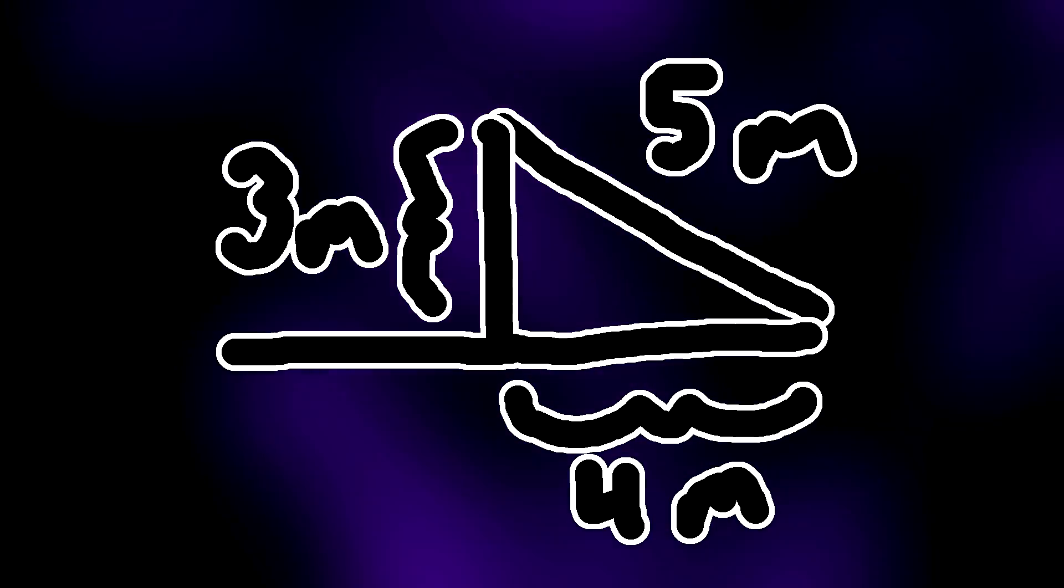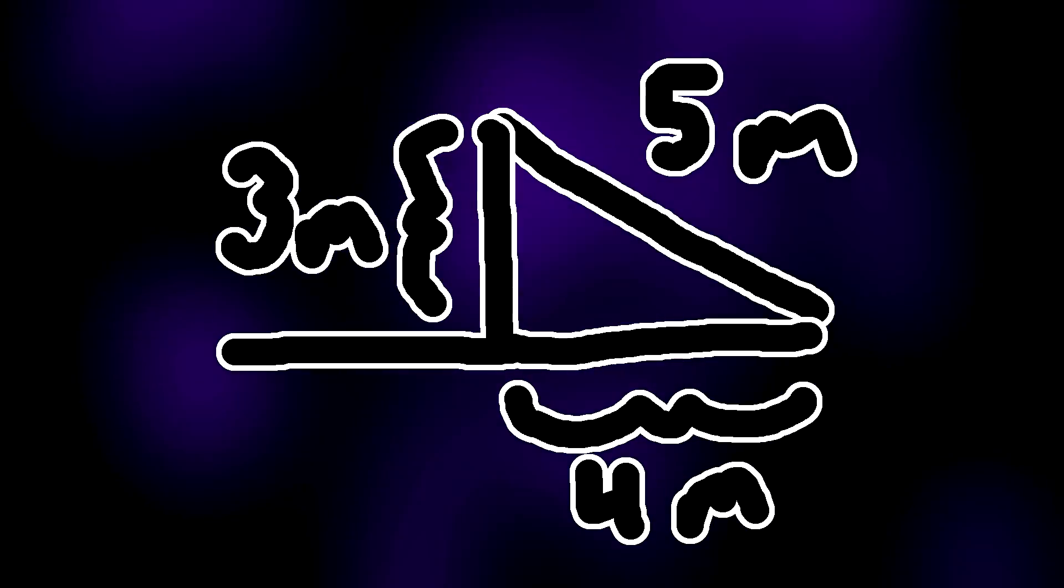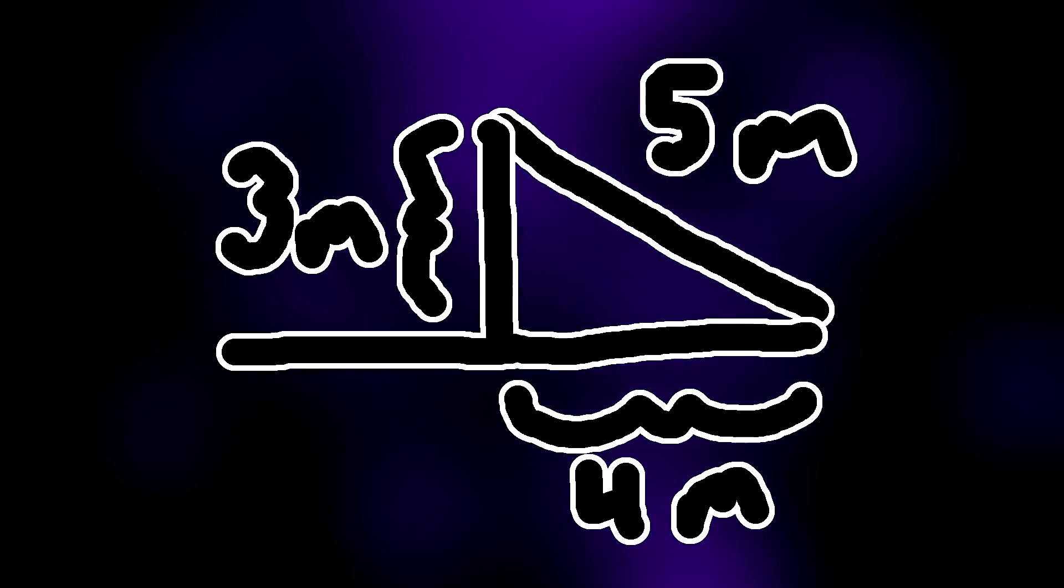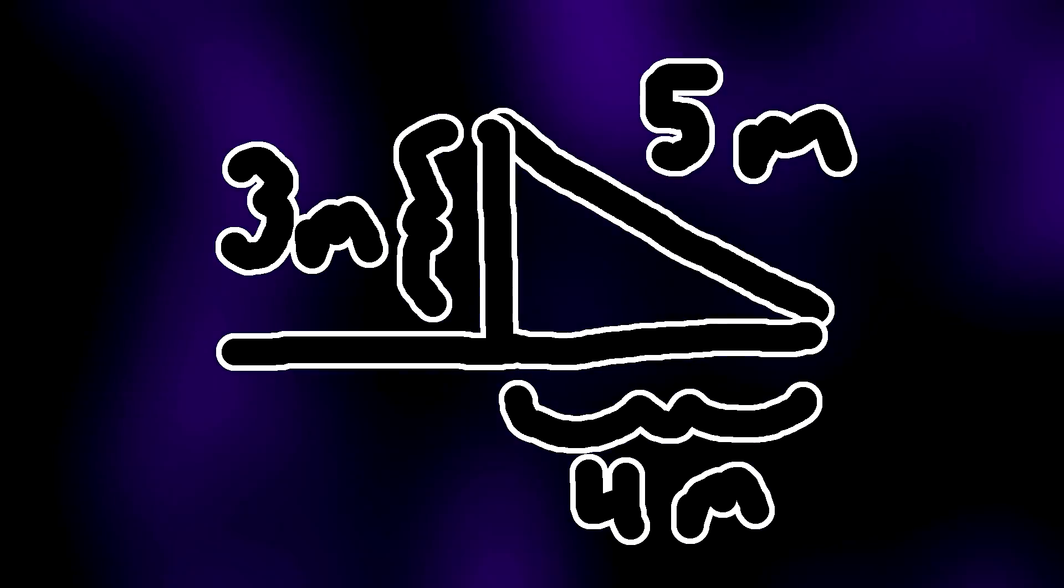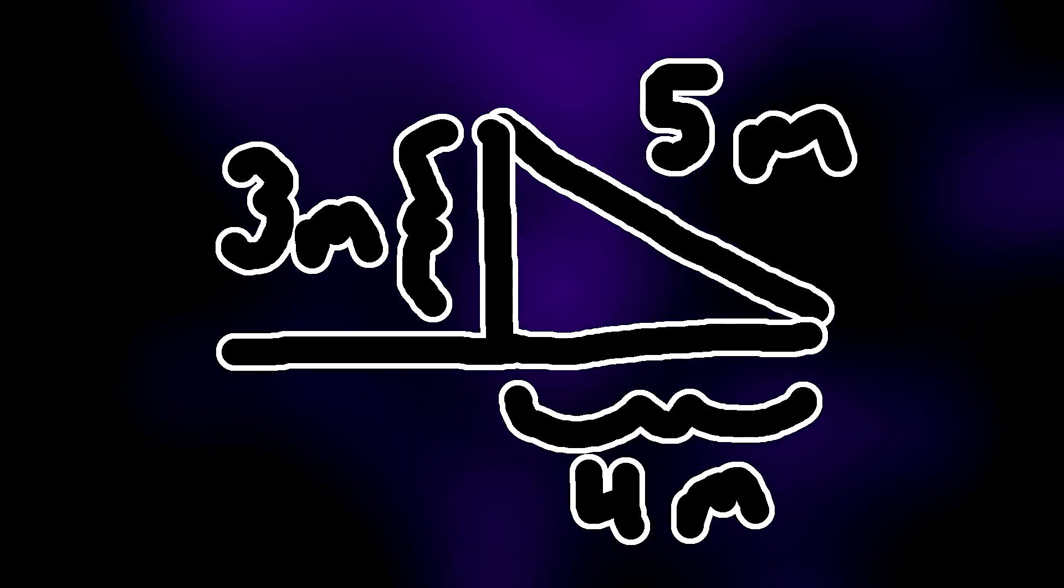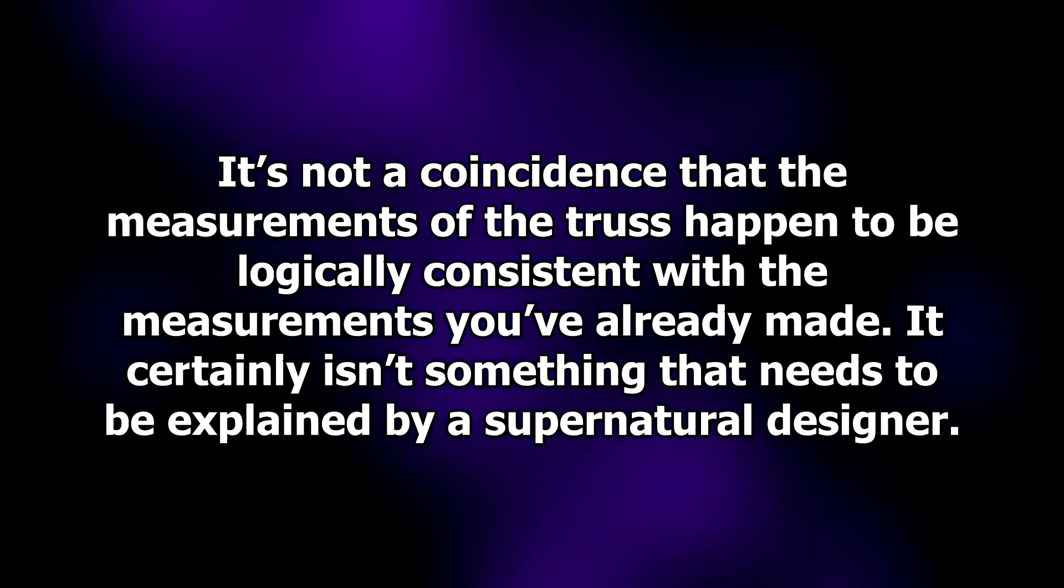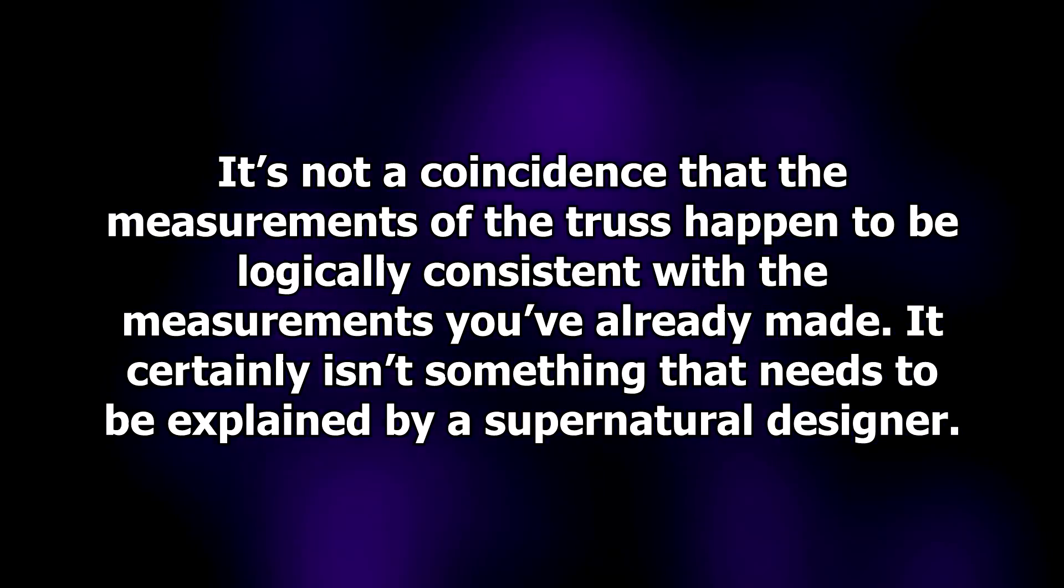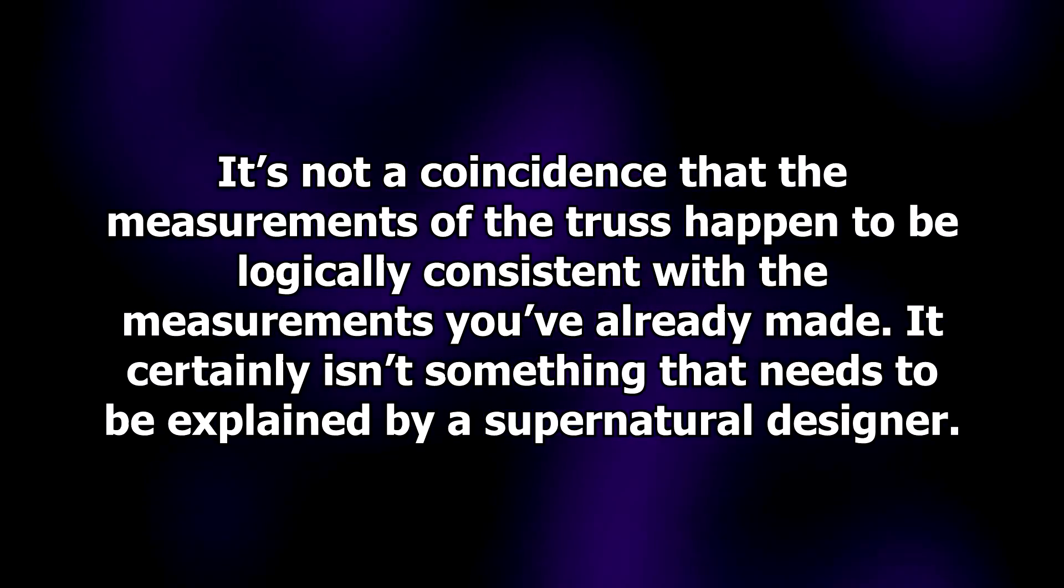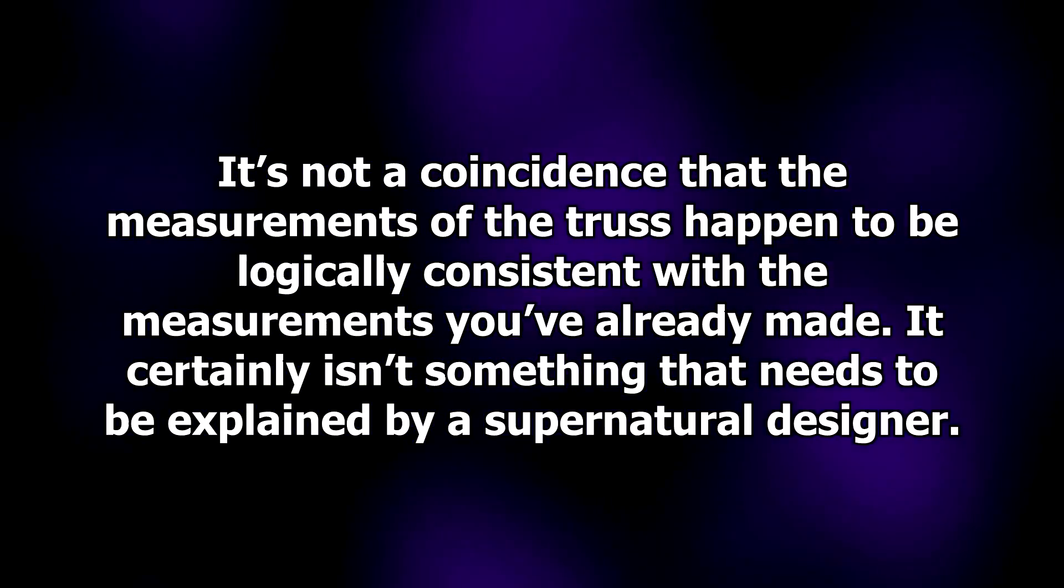By saying that half the truss is a right-angle triangle, half the tie beam is four meters, and the king post is three meters, you are effectively already saying that the rafter is five meters. It's not a coincidence that the measurements of the truss happen to be logically consistent with the measurements you've already made. It certainly isn't something that needs to be explained by a supernatural designer.